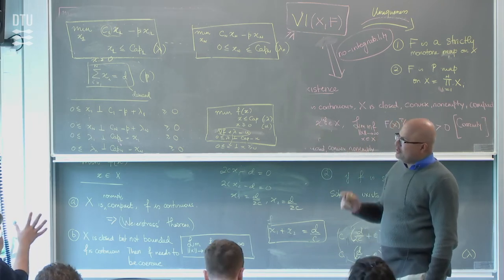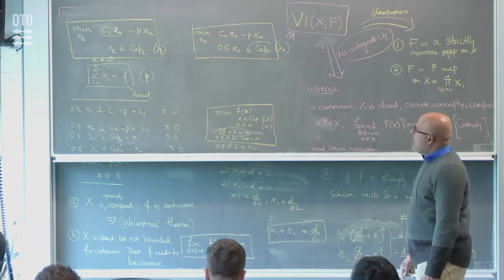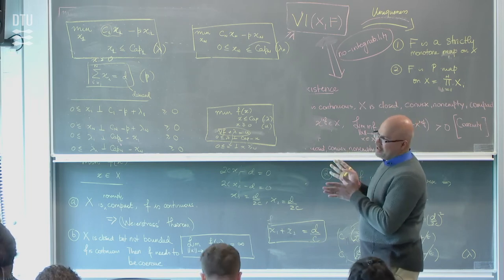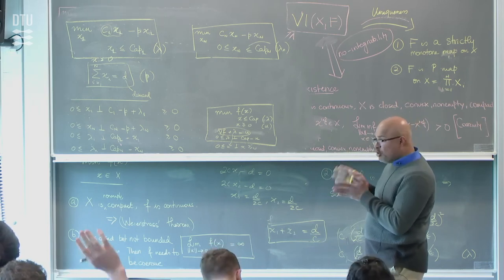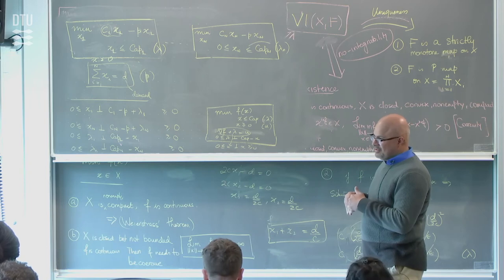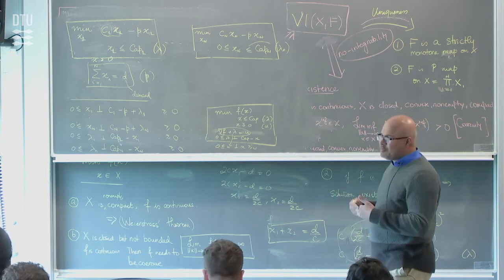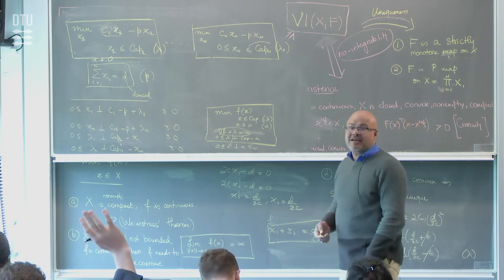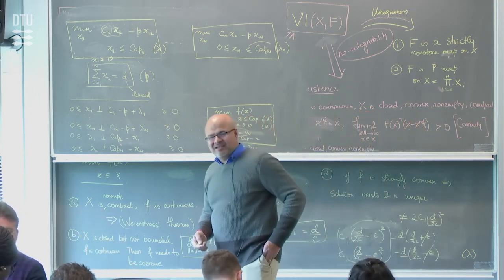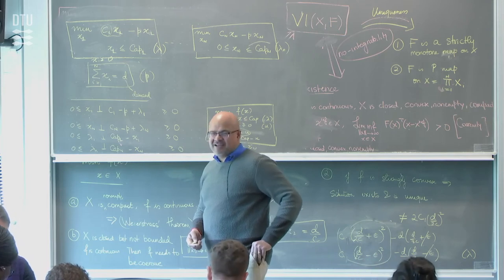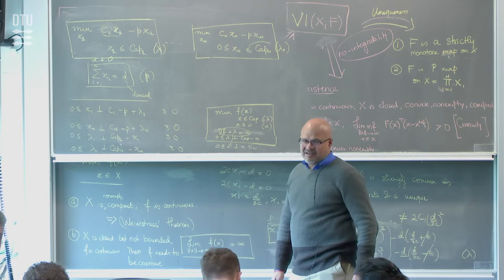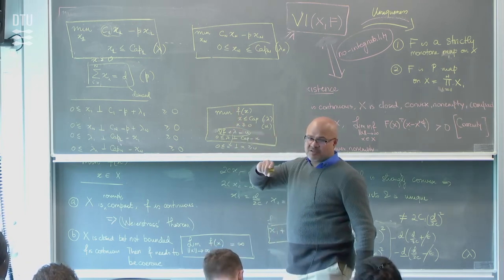I don't call it generalized Nash because at least as it stands, the constraint is not inside. I could put it inside and make it generalized Nash—but I like to keep it outside because it's an exogenous constraint. I'm going to show you it comes down to a single optimization problem.